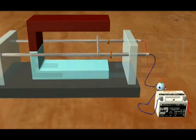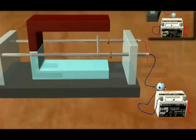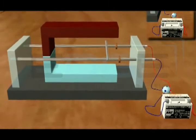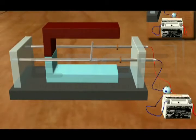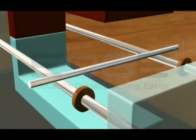As soon as we switch on the battery and the current flows through the conductor, it starts moving towards the left. So let's see why this happens.